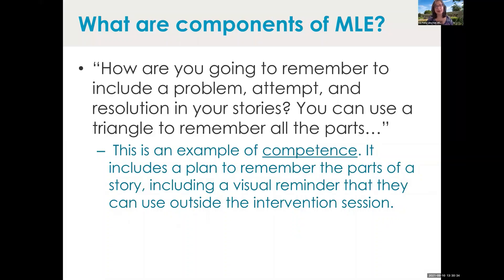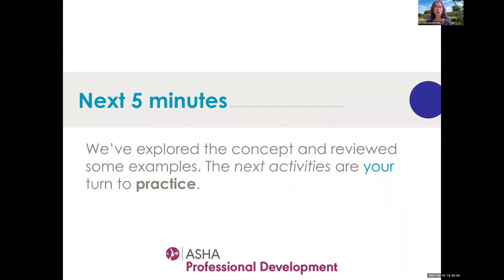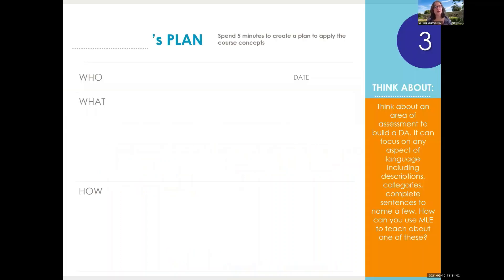These are examples of helping the child plan using competence — a plan to remember the parts of the story, including a visual reminder they can use outside of the intervention session. Now spend a few minutes creating a plan applying these concepts. Think about an area of assessment you can build a dynamic assessment around. It can focus on any aspect of language, including descriptions, categories, or sentences. How can you use mediated learning to teach about one of these kinds of targets?